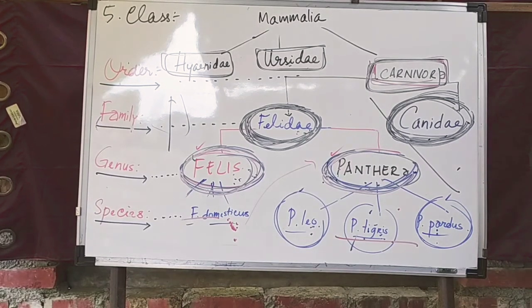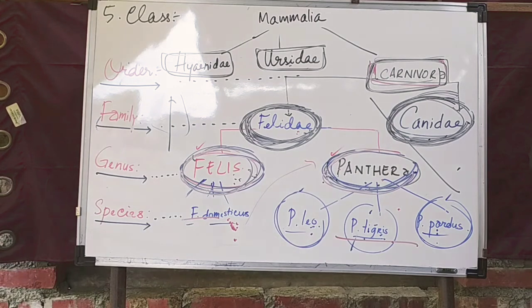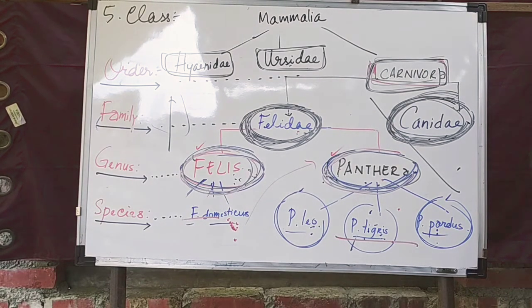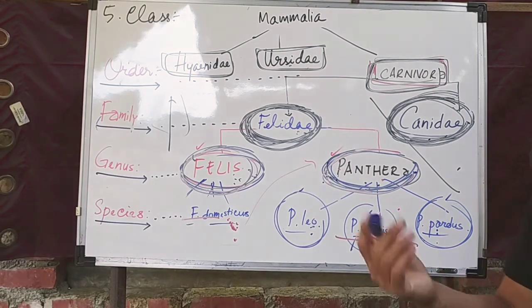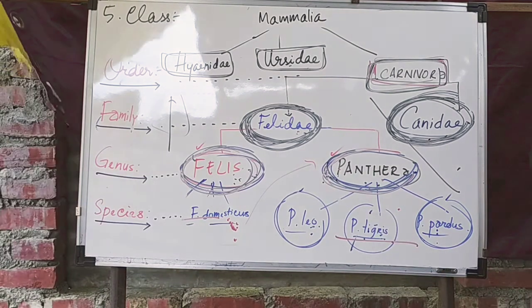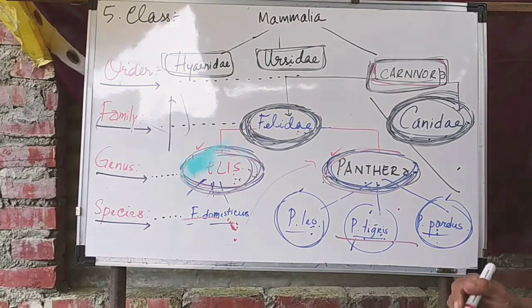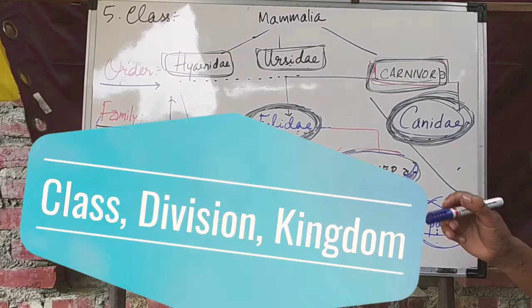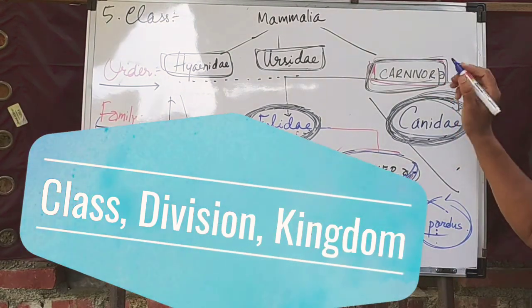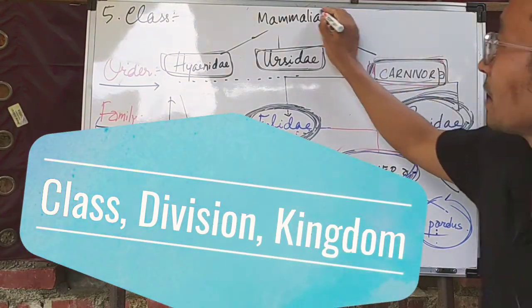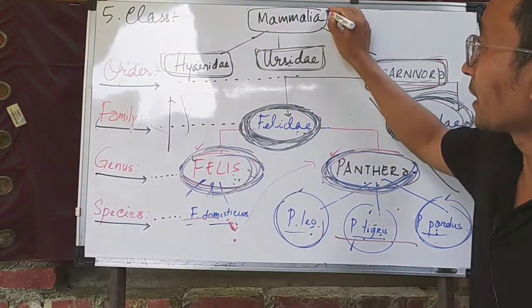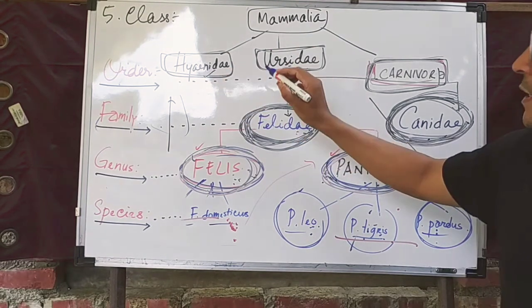Next we have the class. A class is made up of one or more related orders. For example, when we have the class, we have the order.